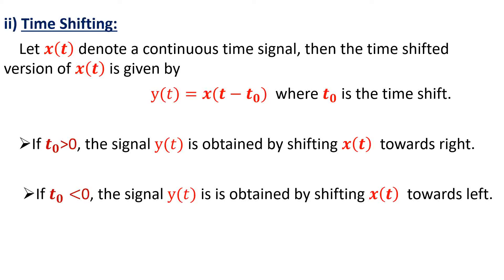Let us take the second operation, that is time shifting. Let x(t) denote a continuous time signal. Then the time shifted version of x(t) is represented as y(t) = x(t − t₀), where t₀ is the time shift. If t₀ value is greater than 0, the signal y(t) is obtained by shifting x(t) towards the right. If t₀ value is less than 0, the signal y(t) is obtained by shifting x(t) towards the left. So y(t) is a shifted version of x(t).